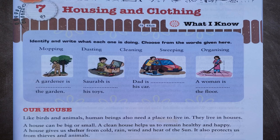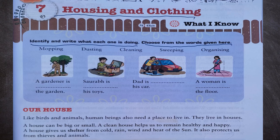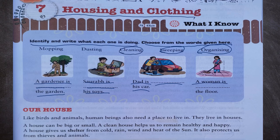Hello friends, welcome to our channel. Today we are presenting Class 3 Science Chapter 7: Housing and Clothing. Let us start. Identify and write what each one is doing. A gardener is sweeping the garden. Saurabh is organizing his toys. Dad is cleaning his car. A woman is mopping the floor.